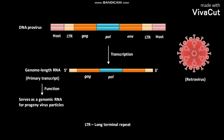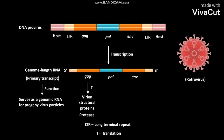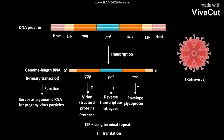POL gene, and ENV gene. The GEC gene undergoes translation to produce virion structural proteins and viral protease. The POL gene undergoes translation to produce reverse transcriptase and integrase. The ENV gene undergoes translation to produce enveloped glycoproteins.